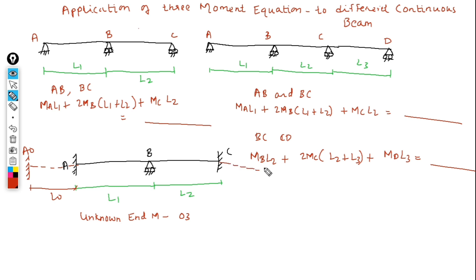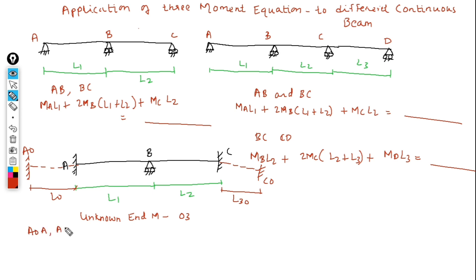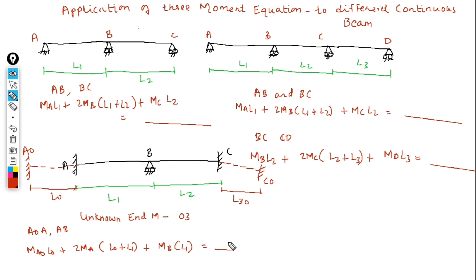Here also we have to take an imaginary span. Now you have four spans: A₀–A, A–B, B–C, and C–C₀. First apply the Three Moment Equation to spans A₀A and AB: Ma₀·L₀ + 2·Ma·(L₀ + L1) + Mb·L1 = (right-hand side). This is equation one.